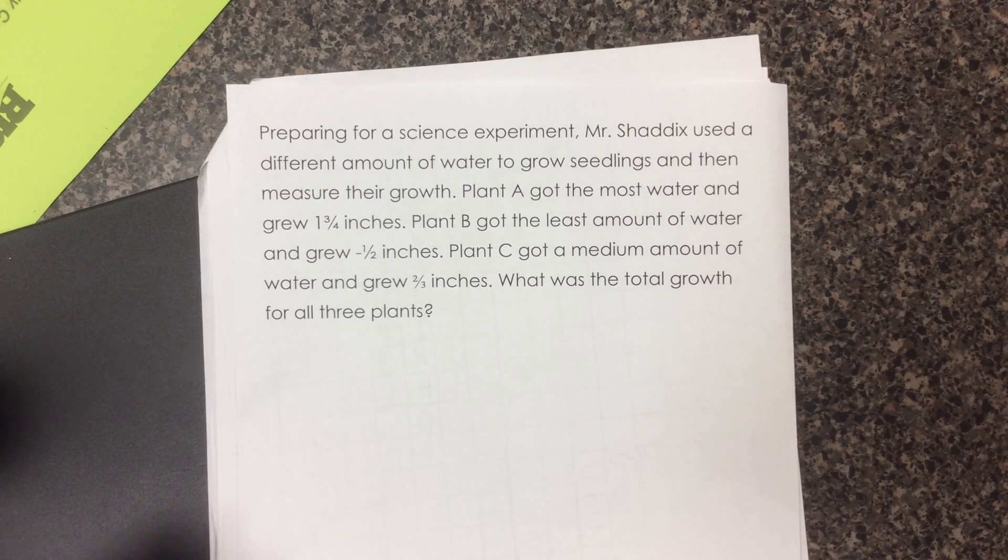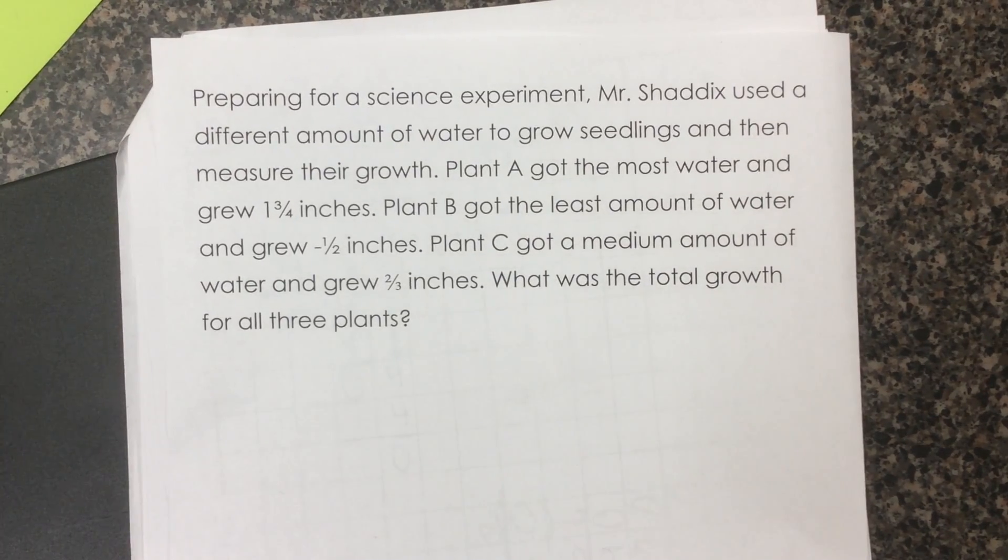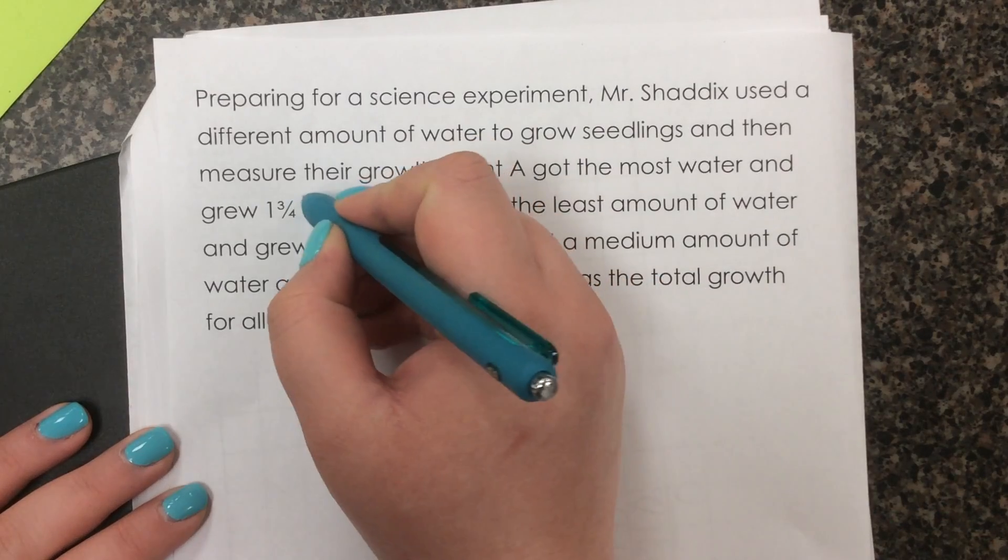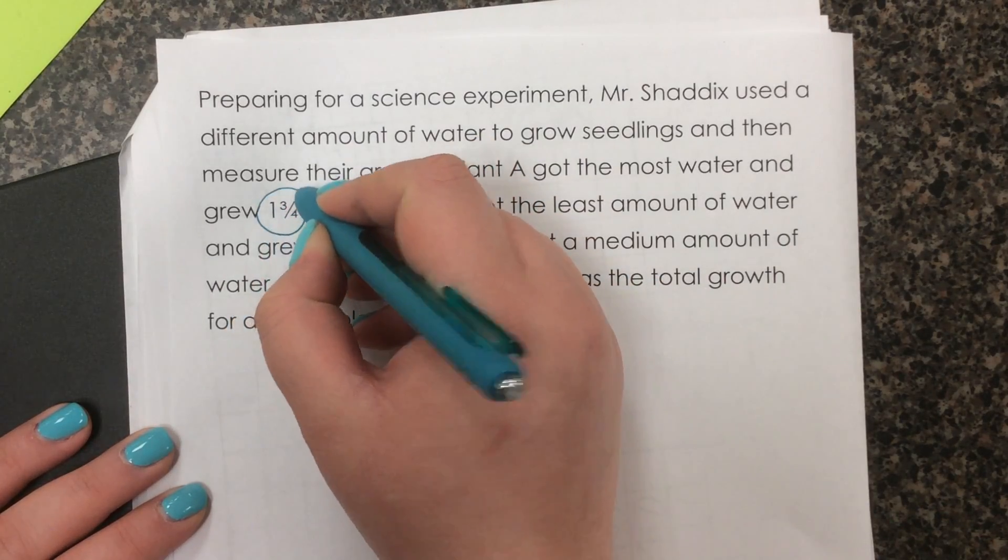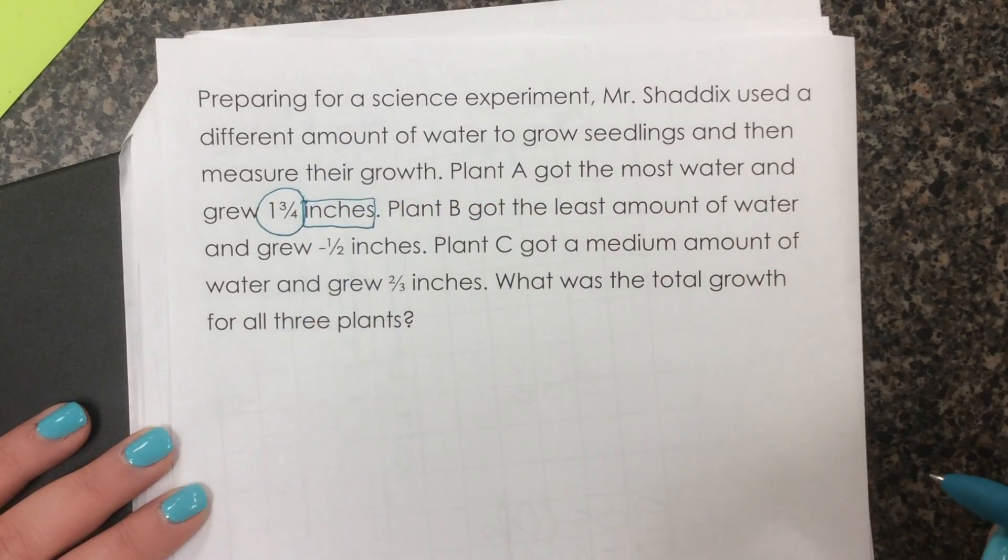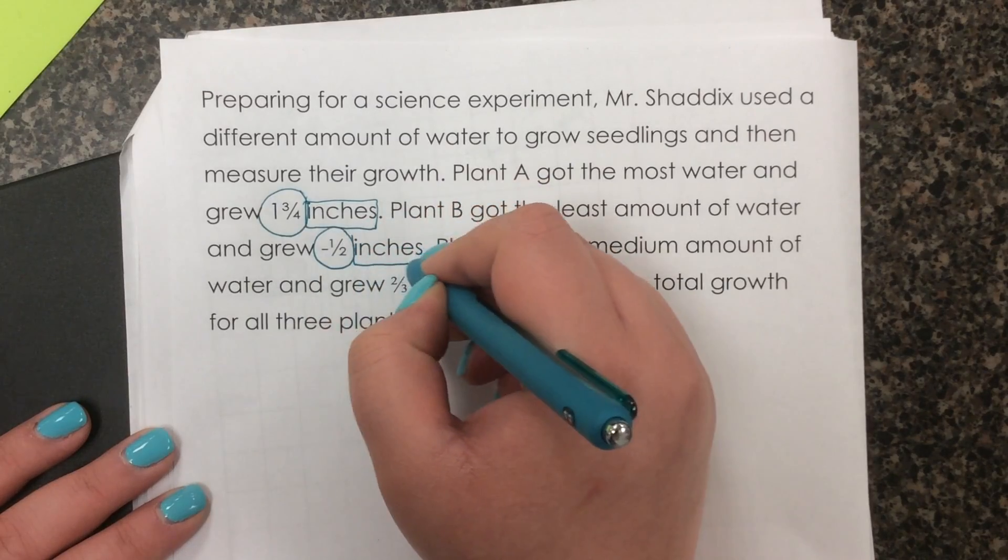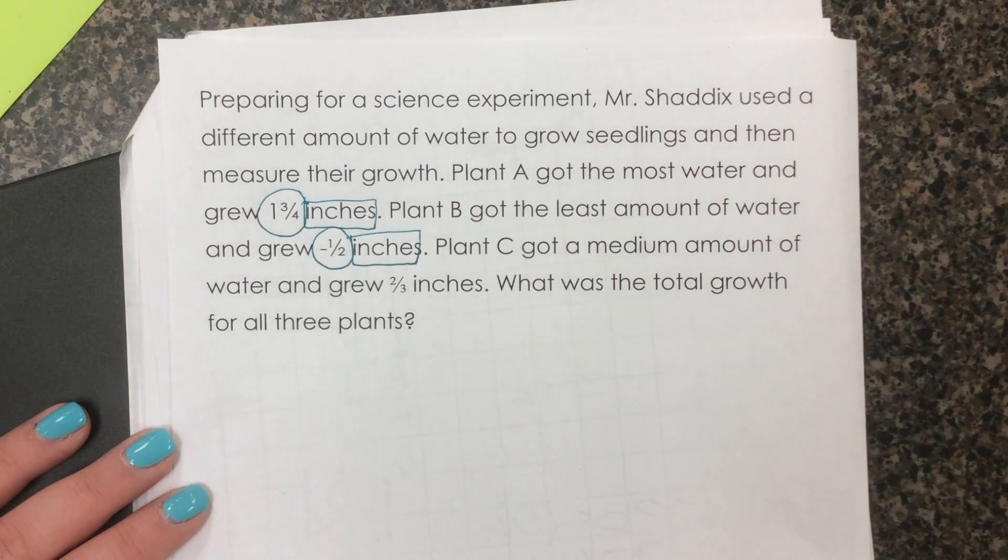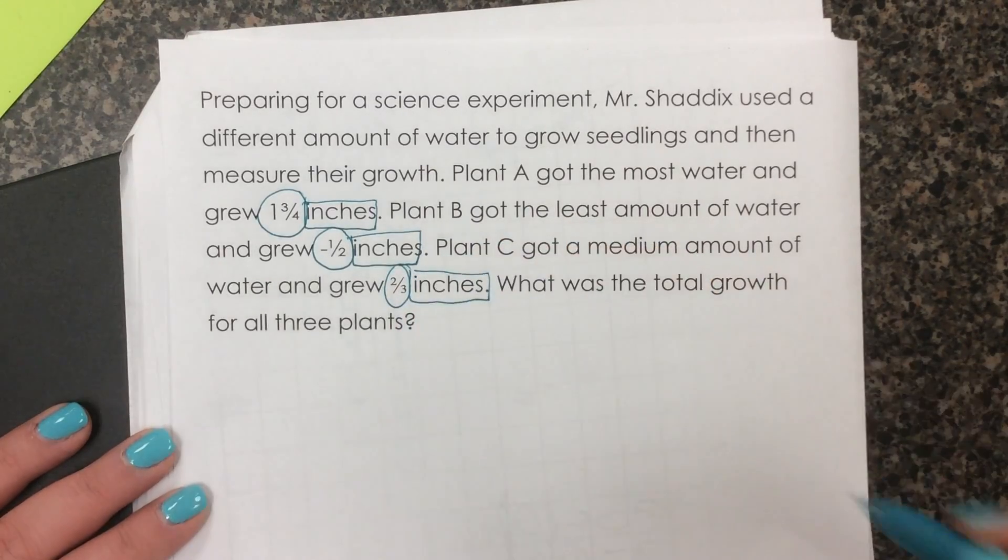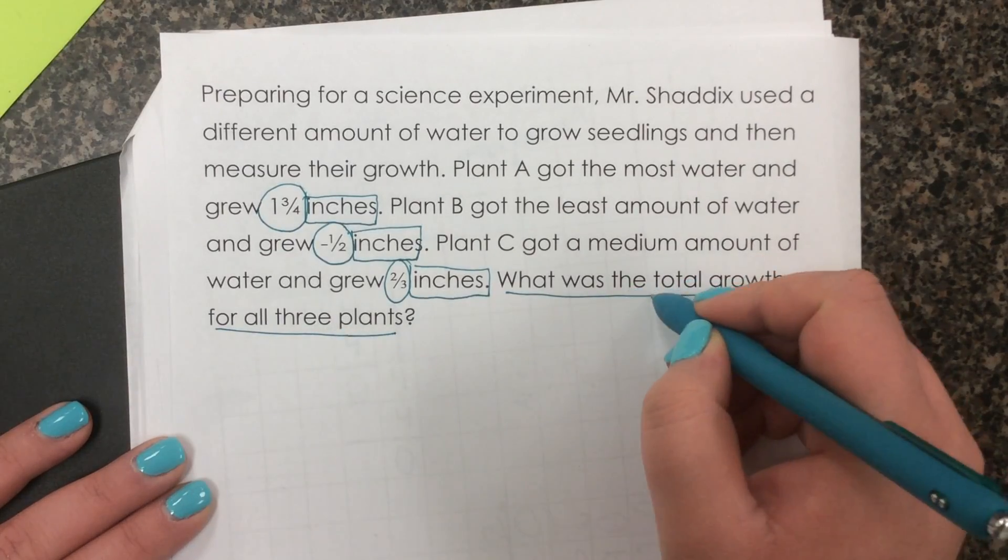Preparing for a science experiment, Mr. Shaddix used a different amount of water to grow seedlings and then measure their growth. Plant A got the most water and grew one and three quarter inches. Plant B had the least amount of water and grew one and a half inches. Plant C got the medium amount of water and grew two thirds inches. What was the total growth for all three plants?